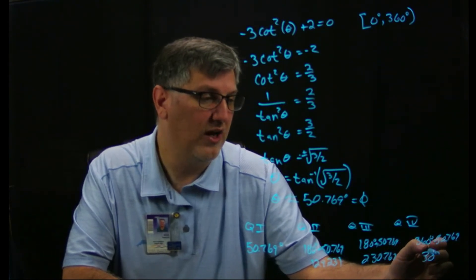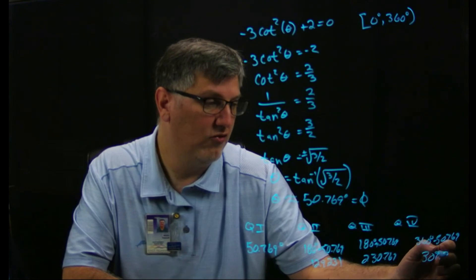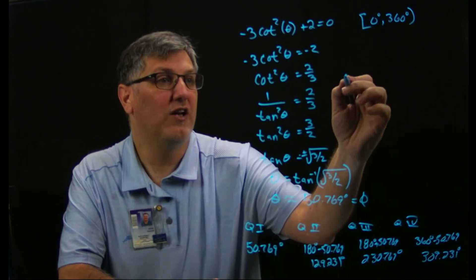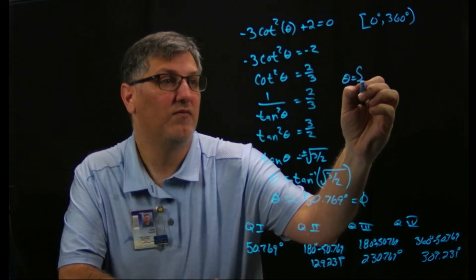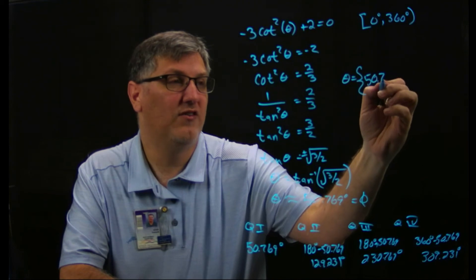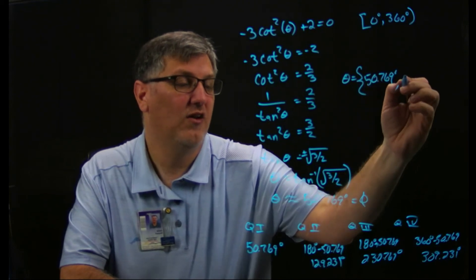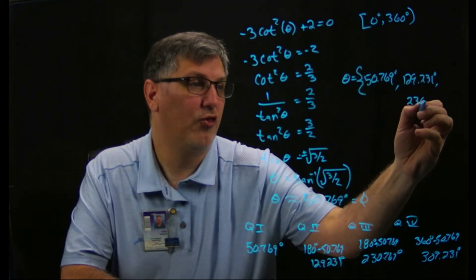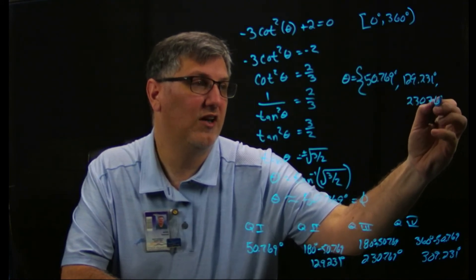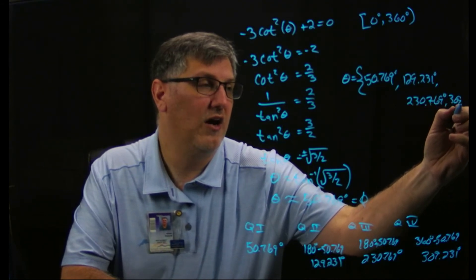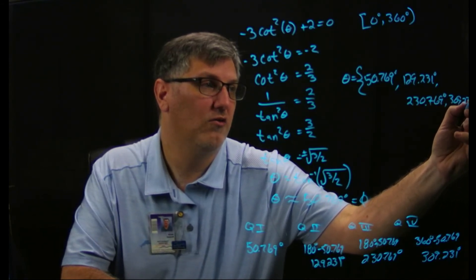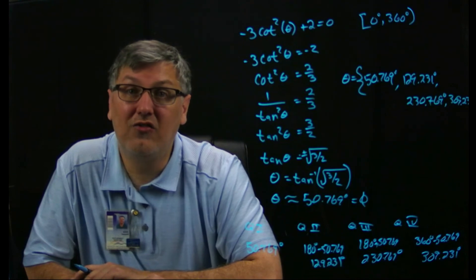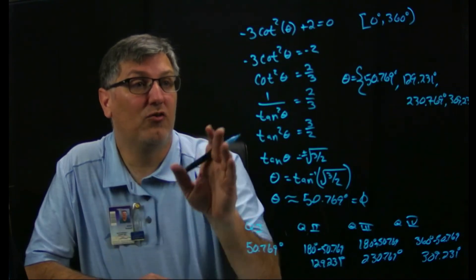And then in quadrant four we're doing 360 degrees minus my 50.769, which is my reference angle. When I do this I get 309.231 degrees. These are all degrees. Therefore my solution here, my theta, is going to be 50.769 degrees, 129.231 degrees, 230.769 degrees, and 309.231 degrees. And those are my four answers to this solution.